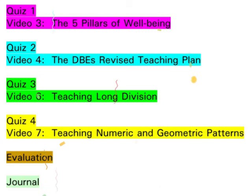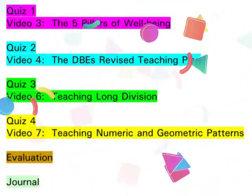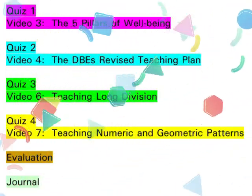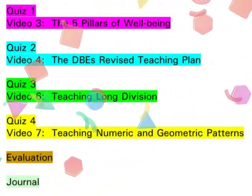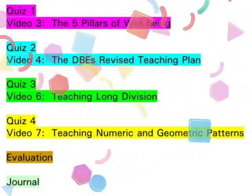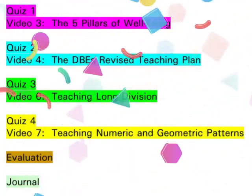Before we conclude, we would like to remind you of the six items of evidence that you need to submit for your workshop evaluation. These appear on the screen now. On the next screen, you will find a link to complete quiz 4. Also remember to complete the online evaluation and workshop journal. We will ensure that you receive a hard copy of the journal. Thank you for choosing to be part of this workshop. We wish you well as you continue your teaching term.